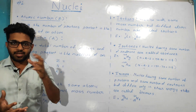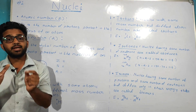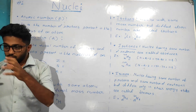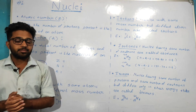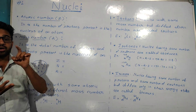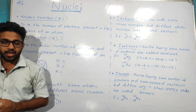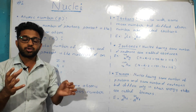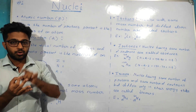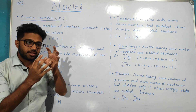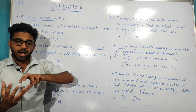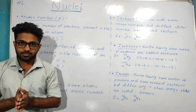Let us start now and understand the meaning of nucleus, or what is an atom. We know the concept of atom. According to that, an atom is made up of protons, neutrons, and electrons. Among them, protons and neutrons are situated at the center, which is called the nucleus, and electrons are revolving around the nucleus.